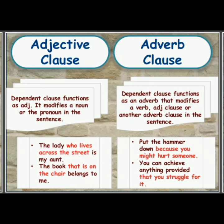Let's have a look at adjective clause and adverb clause. An adjective clause performs the work of an adjective, has a subject and a verb, and usually begins with words like who, whom, whose, that, etc. It answers the question how many or what kind of. For example, "the lady who lives across the street is my aunt" and "the book that is on the chair belongs to me."